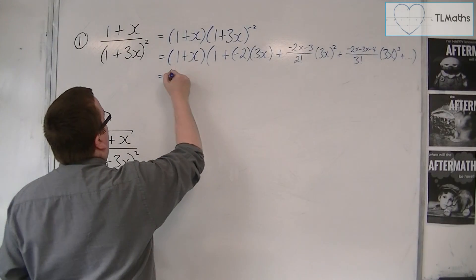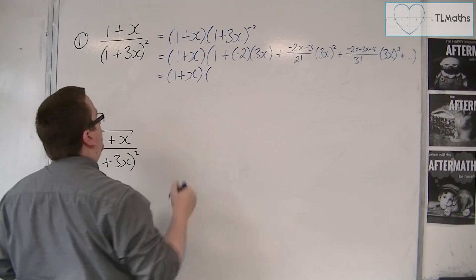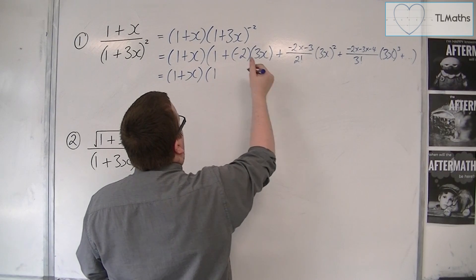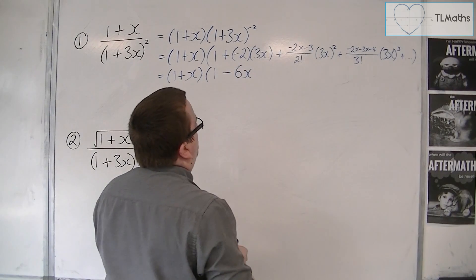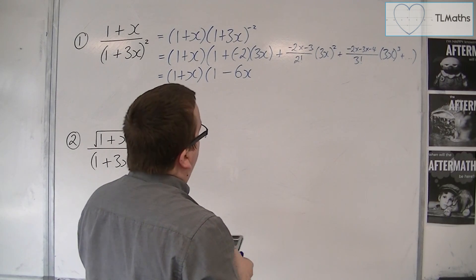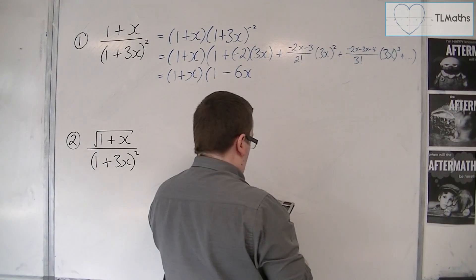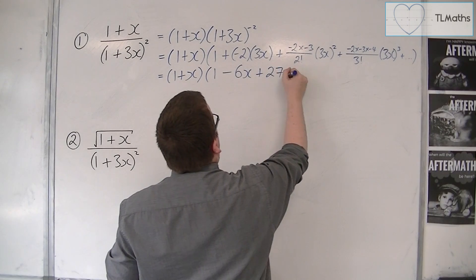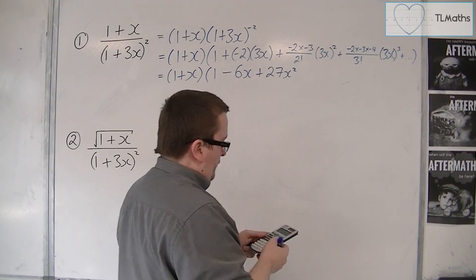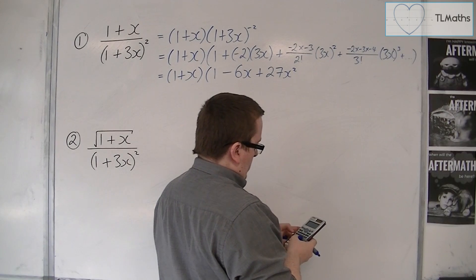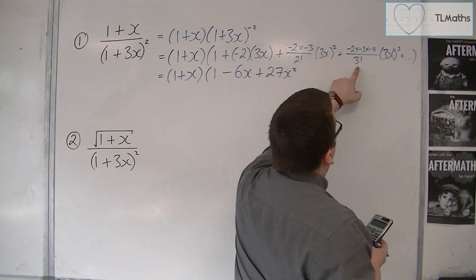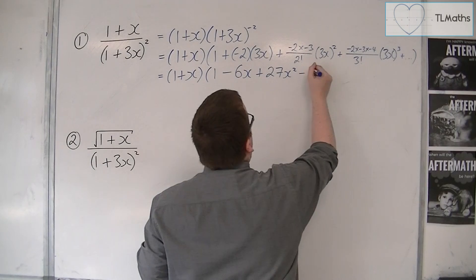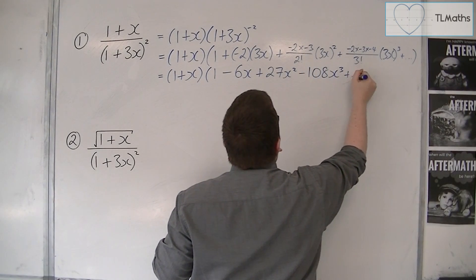This (1 + x) can stay exactly where it is for the moment. Let's simplify: we've got one plus minus two times 3x, so minus six x. Then we've got minus two times minus three, so that's six over two, so three, times three squared, so that's 27, giving 27x². Then minus two times minus three times minus four divided by three factorial, so divided by six, times 27, gives minus 108x³, plus other terms.